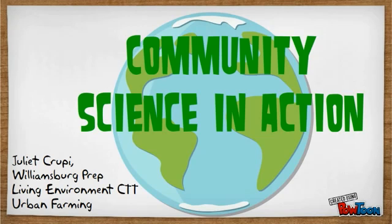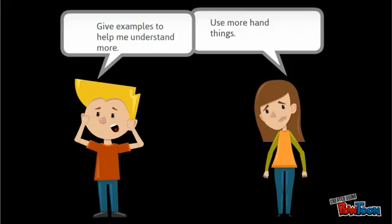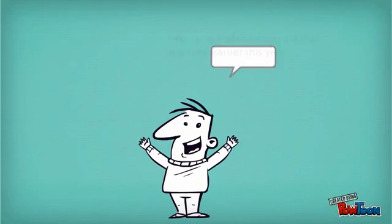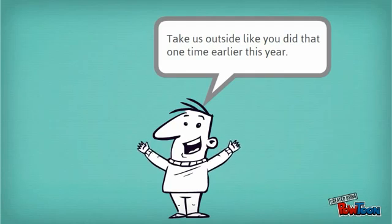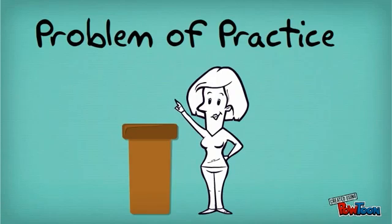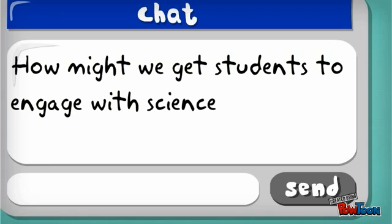I asked my students how we should change the class. Students responded with: give examples to help me understand more, use more hands-on things, and take us outside like you did that one time earlier this year. I realized that students needed to be more hands-on with science and learn in an outdoor classroom. My problem of practice is: how might we get students to engage with science outside of the classroom?